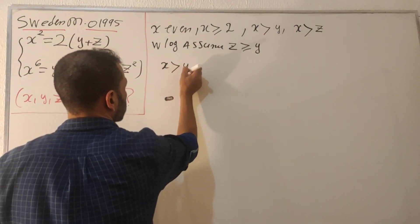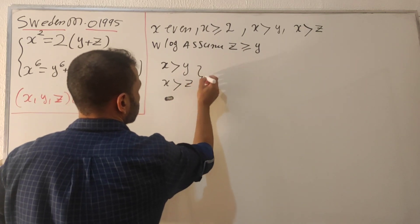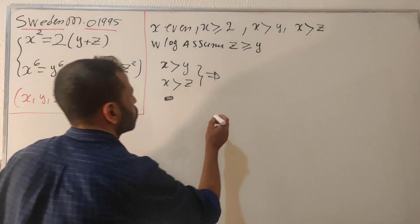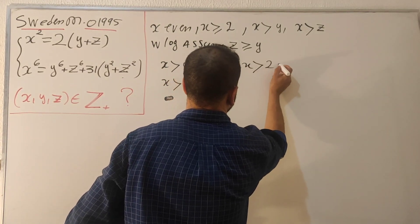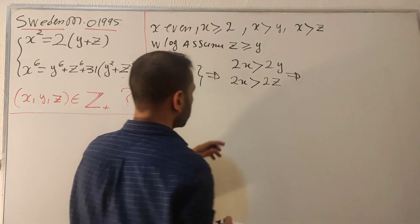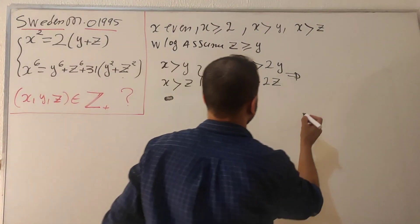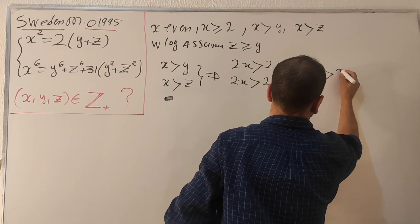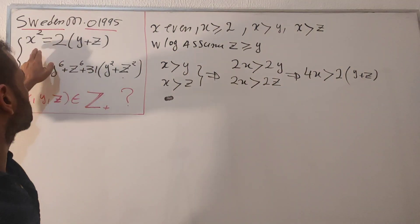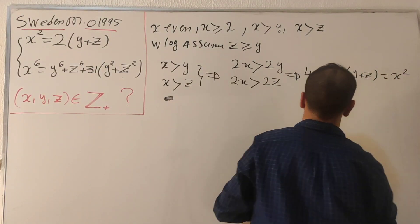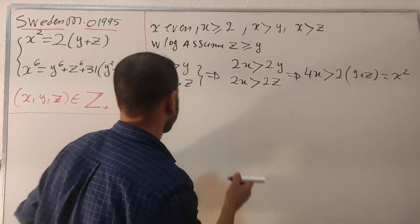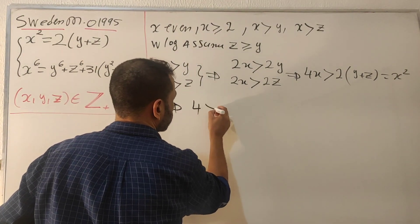Since x is strictly greater than y and x is strictly greater than z, we multiply each inequality by 2: 2x is strictly greater than 2y, and 2x is strictly greater than 2z. Summing these two inequalities gives 4x is strictly greater than 2(y + z). But from the first equation, 2(y + z) equals x squared. Since x is greater than or equal to 2, we can divide both sides by x to get 4 is strictly greater than x.